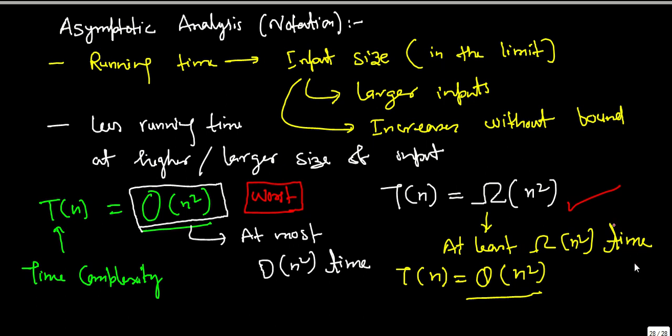Now we will take few examples to understand how the relation exist between two functions or how these notations apply to two functions. Let us suppose we have function f(n) equal to n square plus n plus 100 and we have another function g(n) which is equal to n square plus 2n plus 20, or I can make it 4n square.